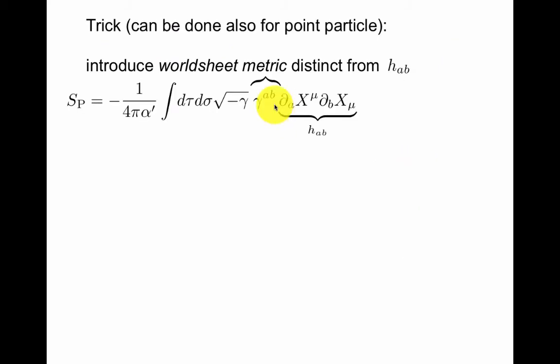And there's a trick. Polchinski discussed it also for the point particle. Here I will only discuss it for the string. Let's introduce a two-dimensional worldsheet metric. We call it gamma. It's distinct from the induced metric little h that we had before, which is this object.